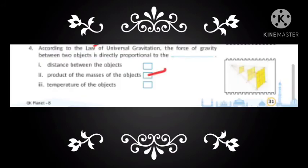According to the law of universal gravitation, the force of gravity between two objects is directly proportional to the product of the masses of the objects. So, the force of gravity is proportional to M1 and M2, where M1 and M2 are the masses of two objects.